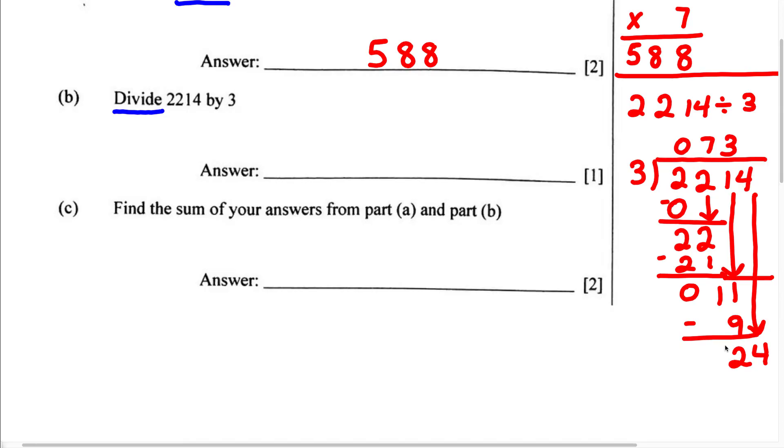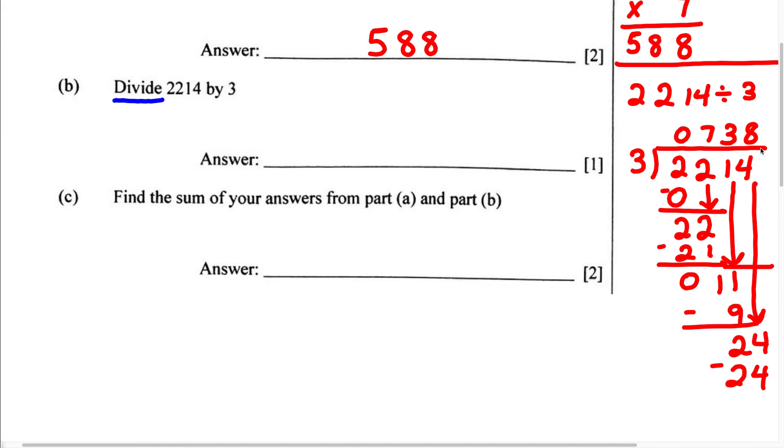3 can go into 24 eight times. 3 times 8 is 24, and when we subtract this, 4 minus 4 is 0 and 2 minus 2 is 0.